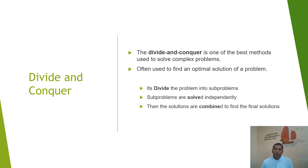In the divide and conquer method, if the problem is very complex and if there is a possibility that the original problem can be subdivided into small problems known as subproblems, then these subproblems can be executed, solved independently, and then the final solution can be combined altogether.